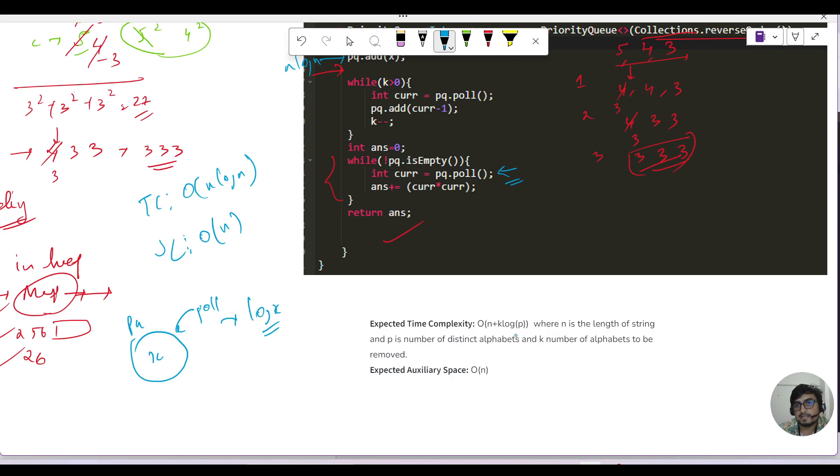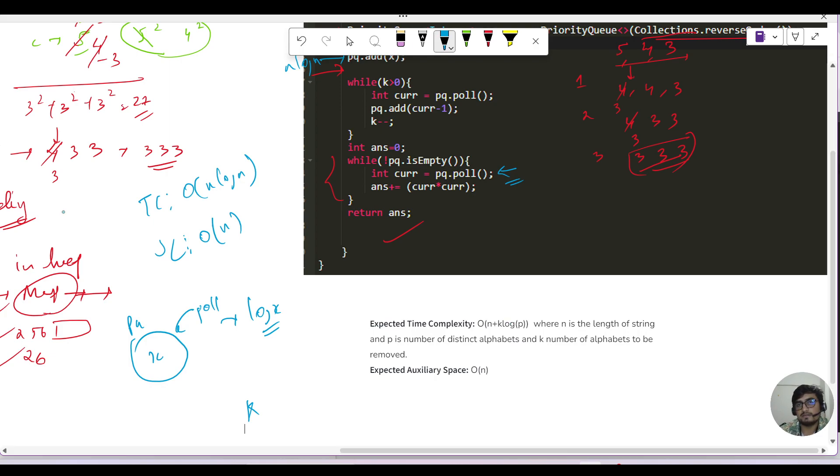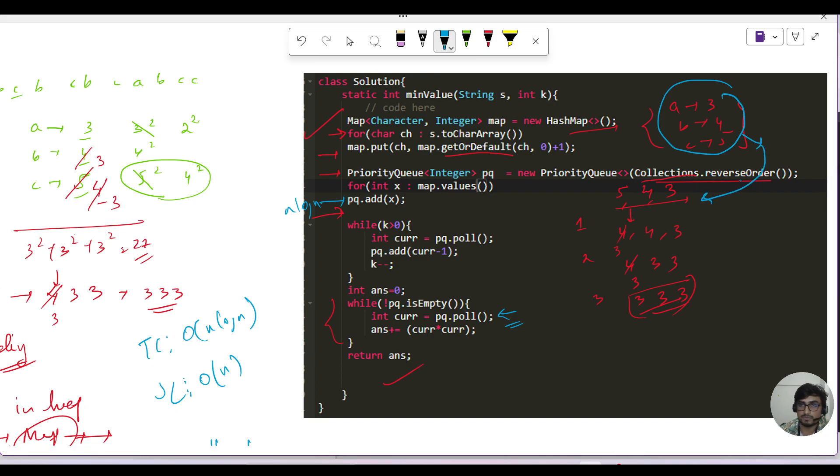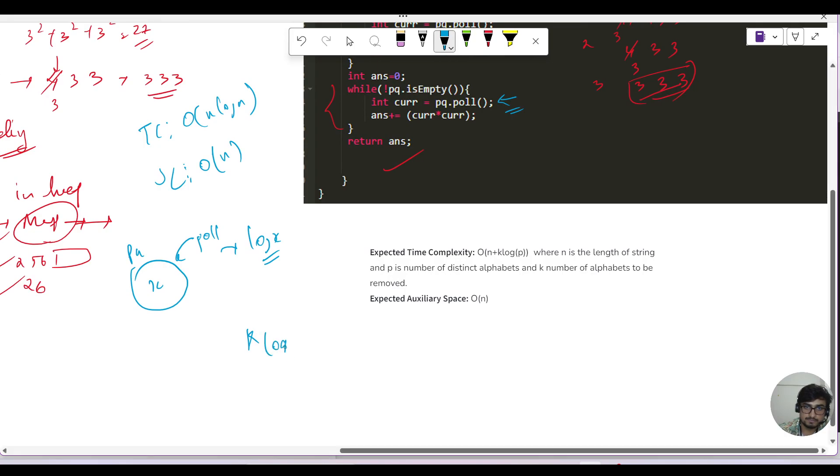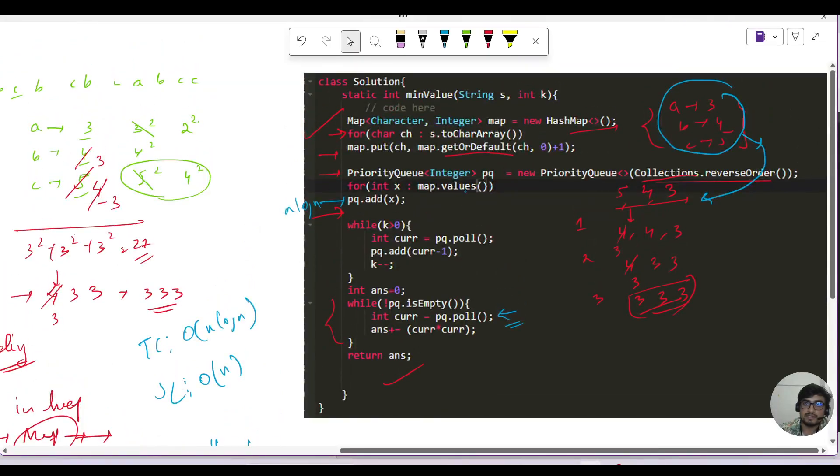So what did they say? Let's say the priority queue has p elements. Now we have this poll call method, so time complexity is log p. We have to remove k times, correct? We are removing it k times. So first we have k, then log of p. What does p mean? The number of distinct alphabets. So definitely, whatever the number of distinct alphabets is, we have a map. So the size of the map is nothing but the number of distinct alphabets, and this frequency is put in the priority queue. So that is why they have said k log p. And there is an n plus because we are pushing all the elements in the map and in the priority queue. So that is it.